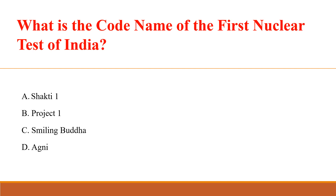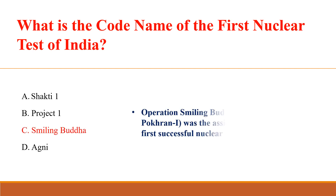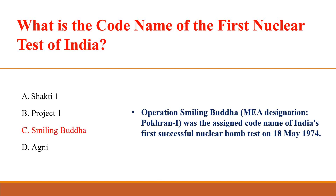What is the code name of the first nuclear test of India? Answer: C. Smiling Buddha. Operation Smiling Buddha, designation Pokhran-1, was the assigned code name of India's first successful nuclear bomb test on 18th May 1974.